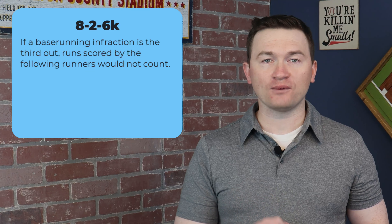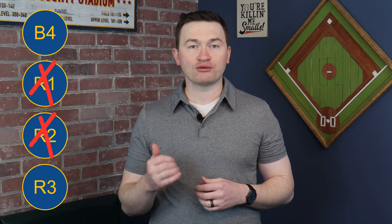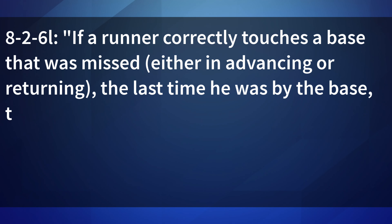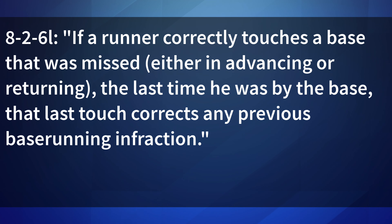Before moving on from K, the sentence before that covers missed bases for a 3rd out and states: if a base running infraction is the 3rd out, runs scored by the following runners would not count. So if a 2-out grand slam is completed with the defense successfully appealing R2 missed home, then only one run would score — R2 doesn't score because they're out, and R1 and the batter runner do not score because they would have scored after R2. Finally, the last paragraph covers the last-time-by concept and states: if a runner correctly touches a base that was missed, the last time he was by the base, that last touch corrects any previous base running infraction. You must stick with me in case play number seven, because there is a noticeable exception to this rule only clarified in the casebook.